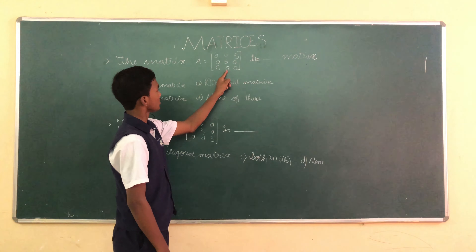The matrix A equals [0,0,5; 0,5,0; 0,...] is a dash matrix. Option A: square matrix. Option B: diagonal matrix. Option C: unit matrix. Option D: none of these. A square matrix is one in which the number of rows equals the number of columns. Here A is a square matrix, but it's not a diagonal matrix because the non-diagonal elements are not equal to zero. And it's not a unit matrix either. So the answer is option A, square matrix.